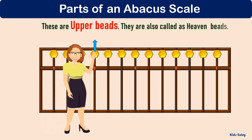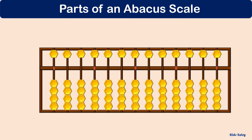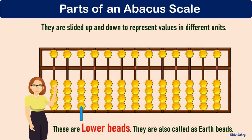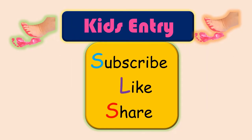These are upper beads, also called heaven beads — each bead has a value of five. These are lower beads, also called earth beads — they are slid up and down to represent values in different units, and each bead has a value of one.